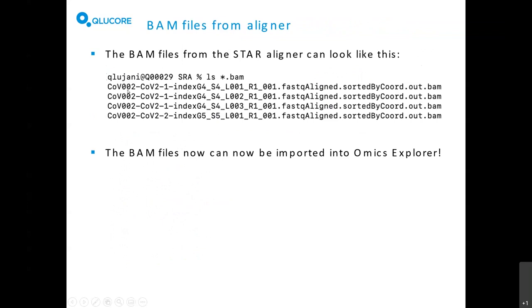The result you get are sorted BAM files. Looking at this COVID dataset, you can see the different files ending with BAM and annotated as sorted by coordinate. This is the output from each file processed. Now we have BAM files and can proceed to the next step. There are a number of steps needed first: download the data, download the SRA toolkit, have an aligner available, and have the correct GTF files. It takes some preparation and time, but it's not something that's very difficult.